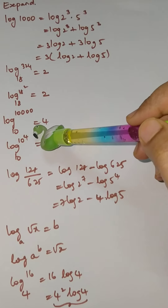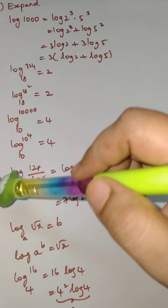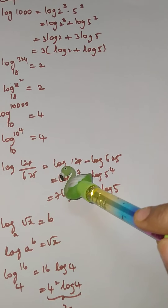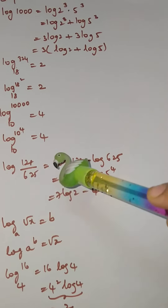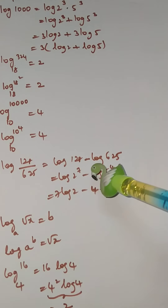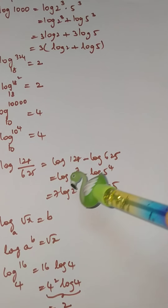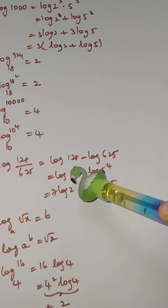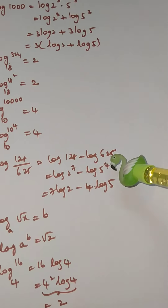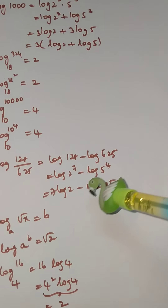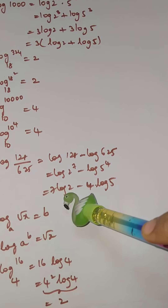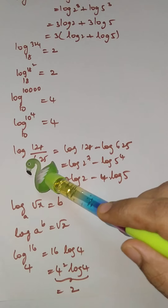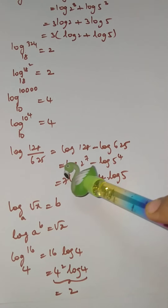For log(128/625): using log(a/b) = log a − log b, we get log(128) − log(625) = log(2⁷) − log(5⁴) = 7log2 − 4log5. That is the answer for log(128/625).